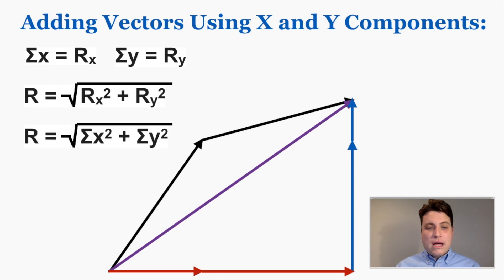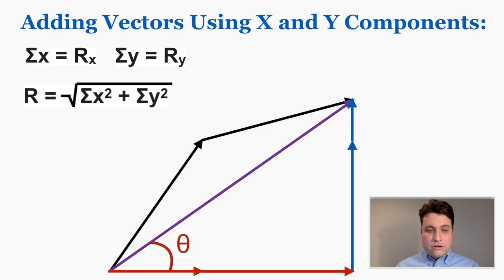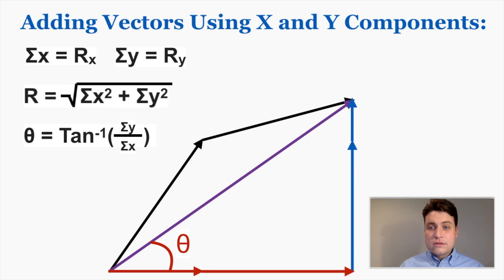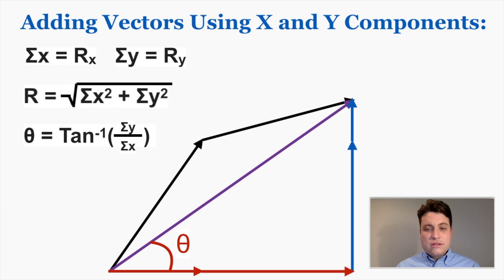Because the x and y components equal the sums of all the individual x and y components, I can rewrite the formula accordingly. To find the angle, you take tan inverse of the sum of the y components over the sum of the x components, because the sum of the y components makes the opposite side and the sum of the x components makes the adjacent side of the right triangle formed by the resultant vector.